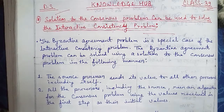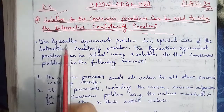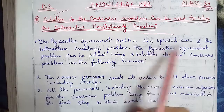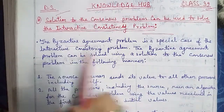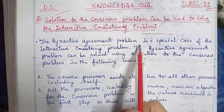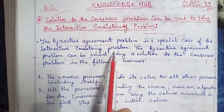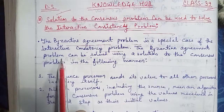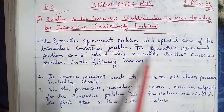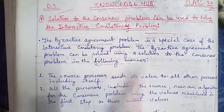The Byzantine agreement problem is a special case of the interactive consistency problem. The Byzantine agreement problem can be solved using a solution to the consensus problem in the following manner.